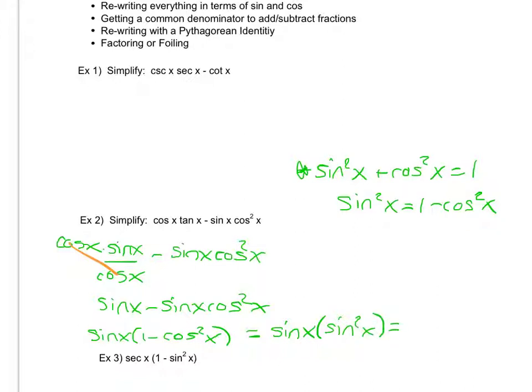Sine x times sine squared x is sine cubed x, which is going to be my simplified answer — much simpler than the original expression I was given.